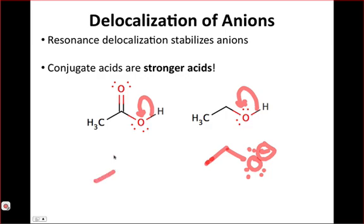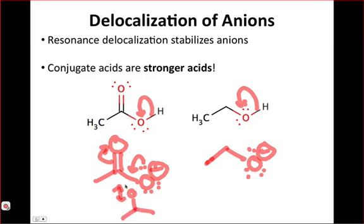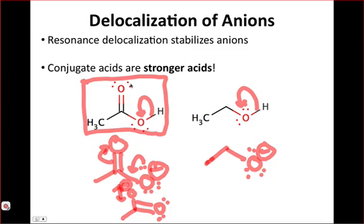However, in the case of acetate, we do have delocalization available into the pi star orbital of the carbonyl, and we can represent that by a resonance structure that shifts the negative charge to the other oxygen. The result of that resonance structure would look like this. From that resonance structure, we can argue that this will be the stronger acid.